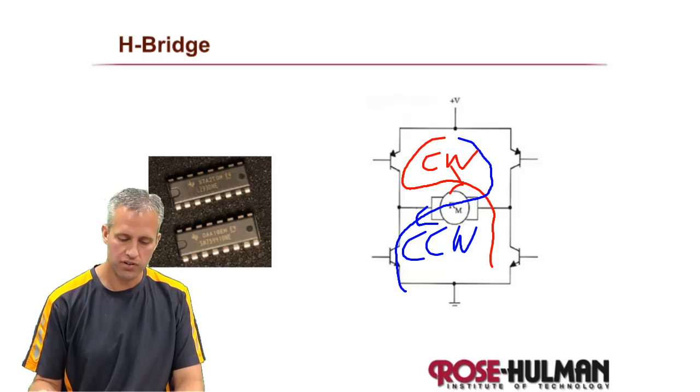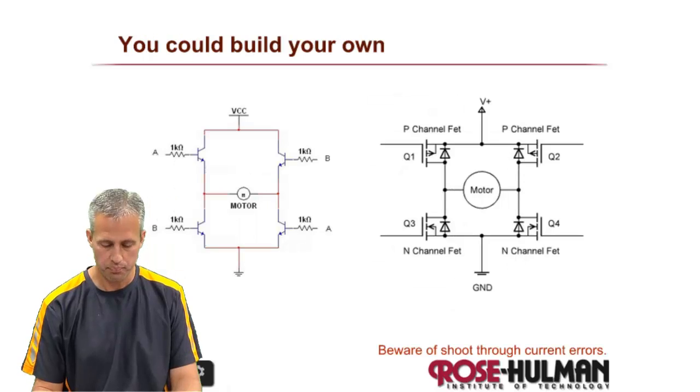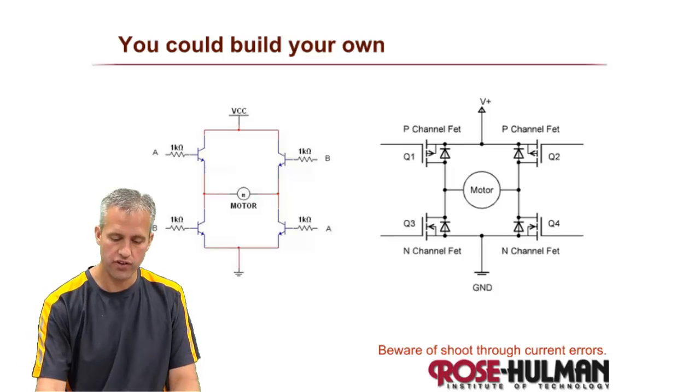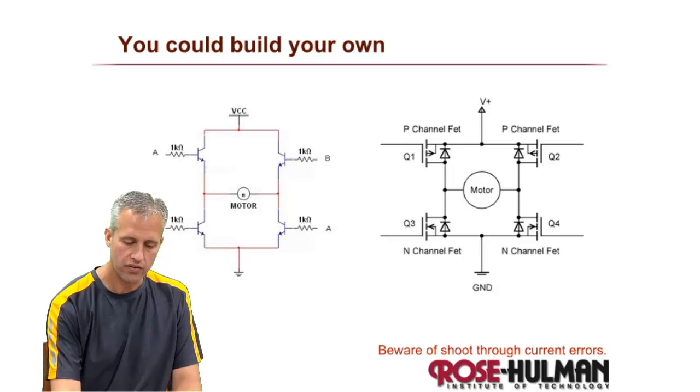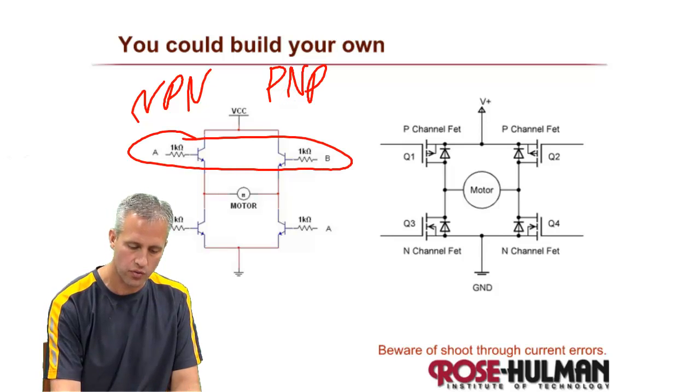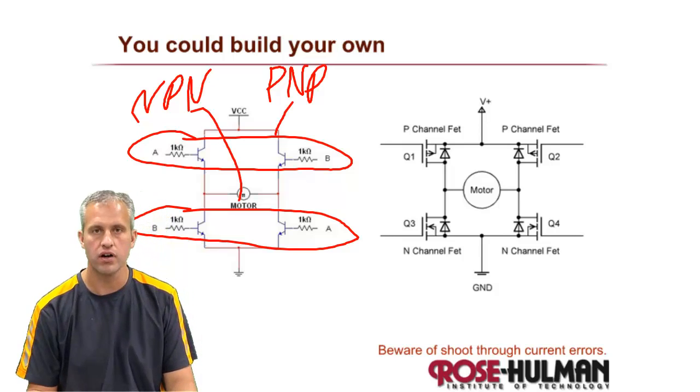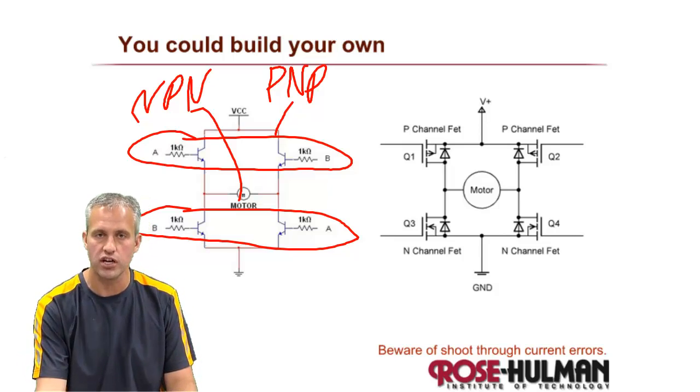Conceptually, pretty simple. What you need to do is have some way to actually build this thing. Your first option is that you could build your own. There's nothing wrong with building your own. You could build it out of NPNs and PNPs. Note that the ones on top would be the PNPs and the ones in the bottoms would be NPNs. You could also build it out of MOSFETs. With MOSFETs, the top two would be P-channel MOSFETs. The bottom two would be N-channel MOSFETs.